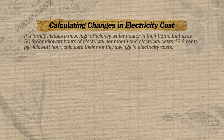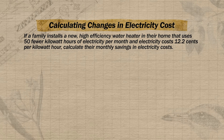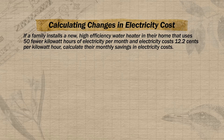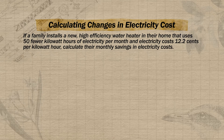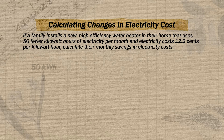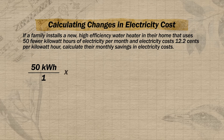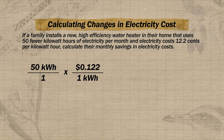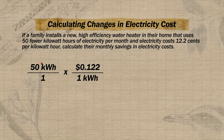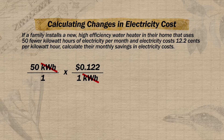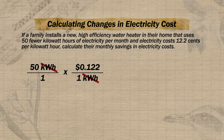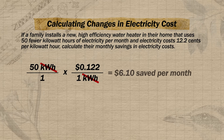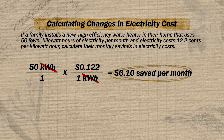For example, if we install a high-efficiency water heater that uses 50 fewer kilowatt hours per month and electricity costs 12.2 cents per kilowatt hour, we write out 50 kilowatt hours over one and multiply by the conversion factor of 12.2 cents over 1 kilowatt hour — putting kilowatt hours on the bottom to cancel those units. This gives us 50 times 12.2, which equals 610 cents, or $6.10 saved per month.